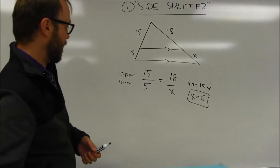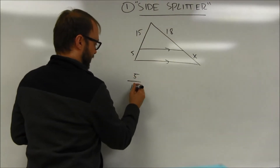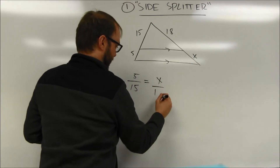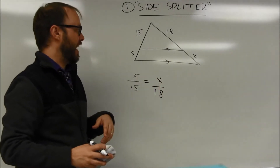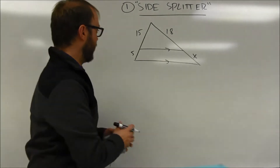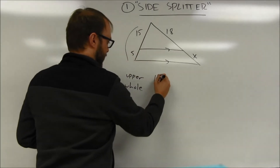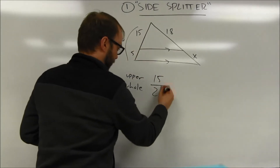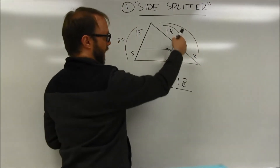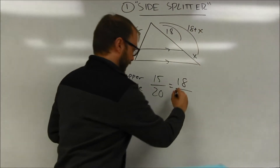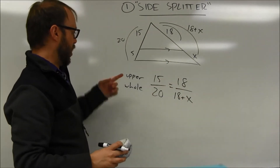There are lots of other proportions you can set up. You could do lower over upper: 5 over 15 equals x over 18, giving a one-third relationship — 6 over 18 is also one-third. You can also do a part compared to a whole. For example, the upper side of 15 compared to the whole side of 20 equals the upper part of 18 over 18 plus x. Cross multiplying still gives x equals 6. You could similarly do the lower part over the whole: 5 over 20 equals x over 18 plus x.